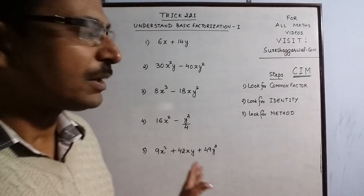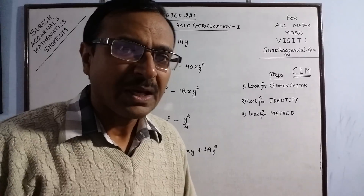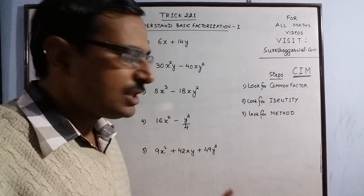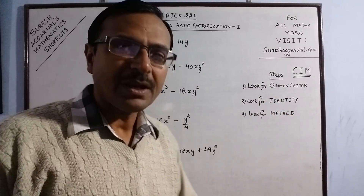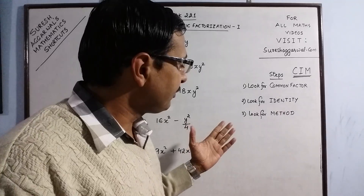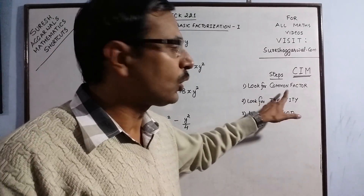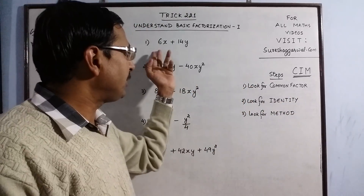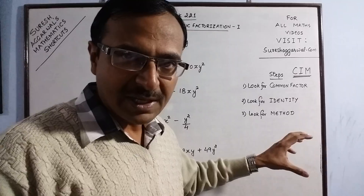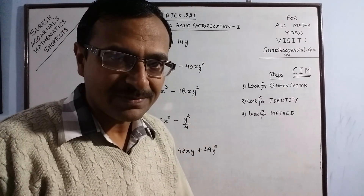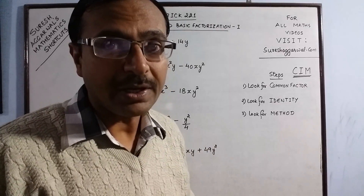Hello dear friends, in trick number 221 today we are going to learn some basic factorization concepts. Whenever we talk of factorization, we need to understand the procedure of taking common factors. There are three basic steps in factorization. Whenever you face a factorization question, the first step is to look for common factors — there may be two, three, or four terms in the question.